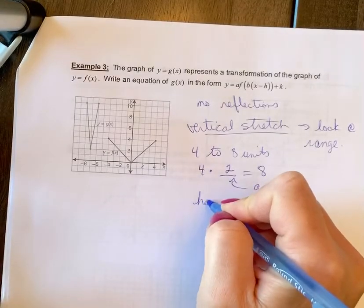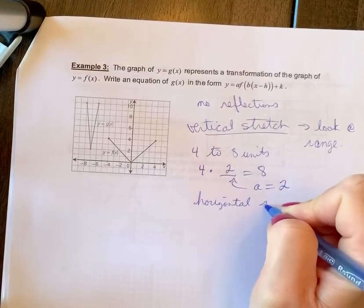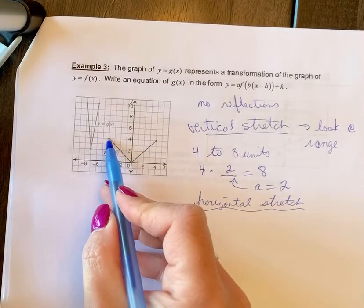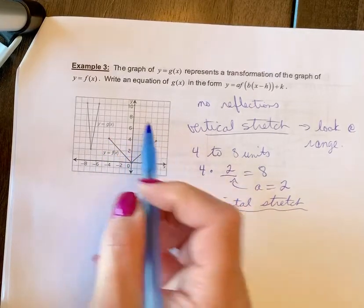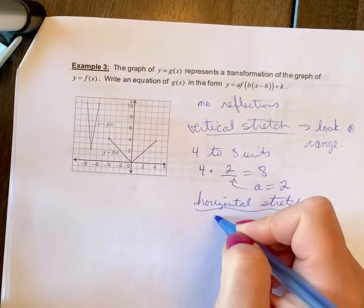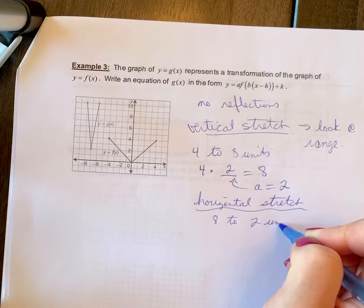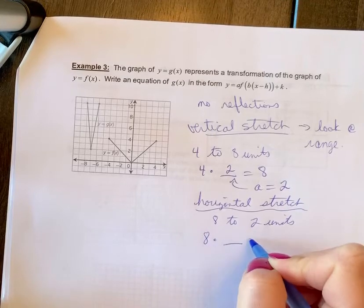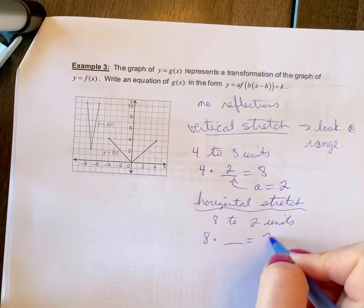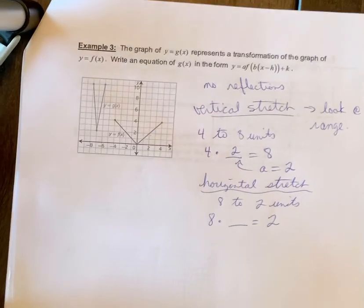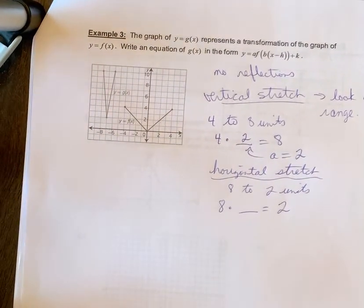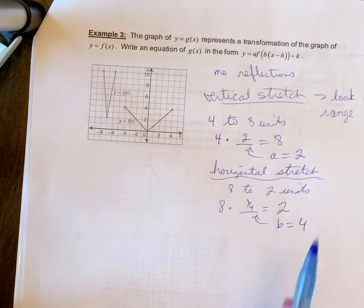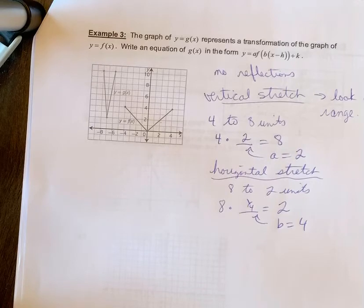Now let's look at the horizontal stretch. So now it went from a distance here of 8 units across, 4 on each side, to just 2. So 8 to 2 units. And again, I don't necessarily need to write it out in words, but what I want to show is these blanks. 8 times what gives me 2. So of course, you might want to think division a little bit. So if you went 8 divided by 4, so dividing by 4 is multiplying by 1 quarter. So your b value is 4. Remember, it's the reciprocal when you're talking about the b value.